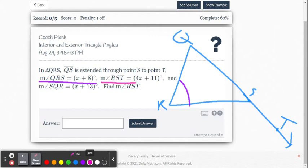Then they tell us that the measure of RST is 4x plus 11. So RST, that's the exterior angle. So that's that angle.